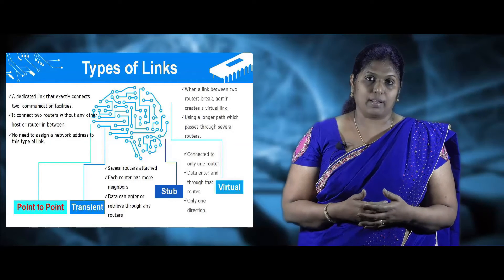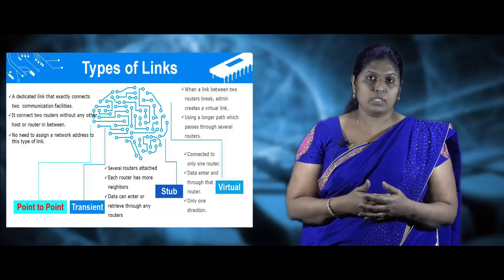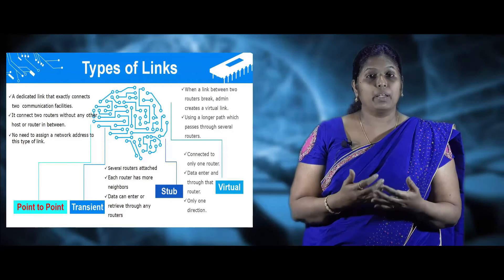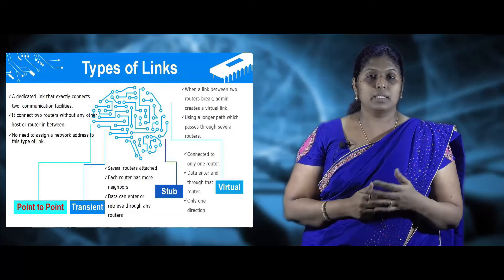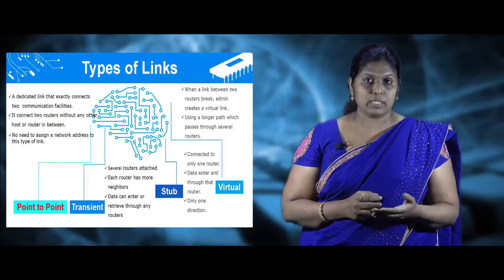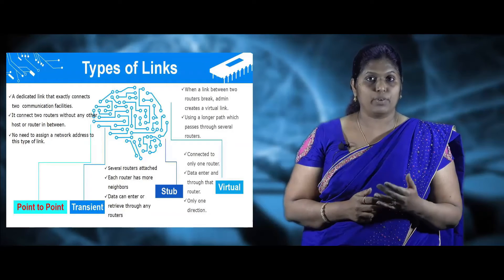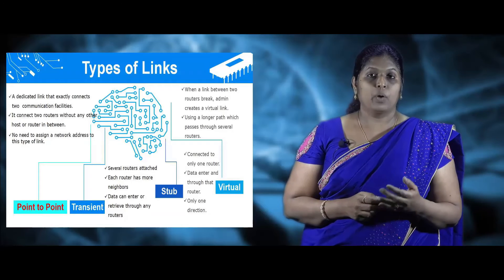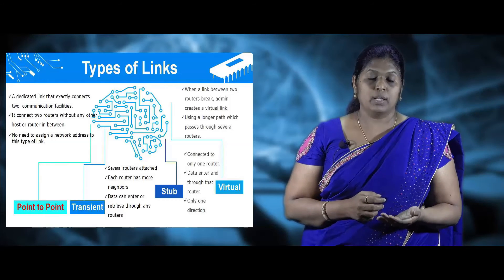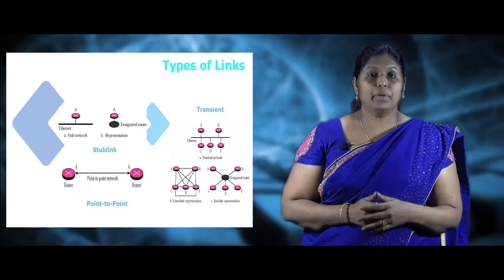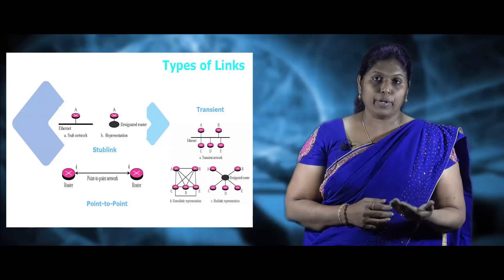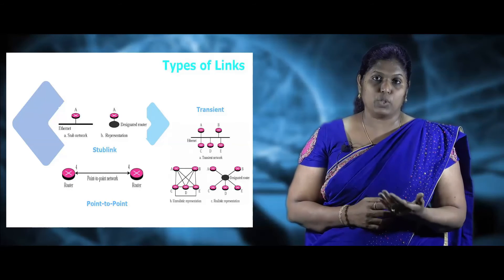The transient link uses many routers, so these routers will have many neighbors and data can be entered and retrieved through many routers. The stub link has only one route. When a link between two routers is disconnected or broken, the admin creates a virtual link. Several routers use the virtual link to route data packets in the network. The picture depicted in the slide shows the types of links used in OSPF, illustrating the point-to-point, transient, and stub links.